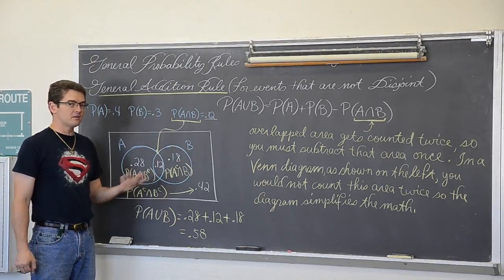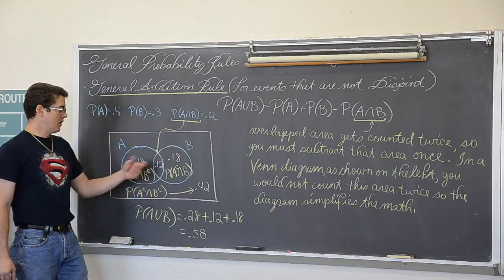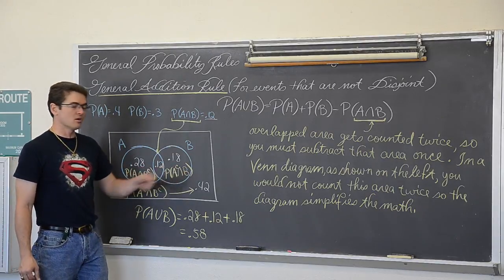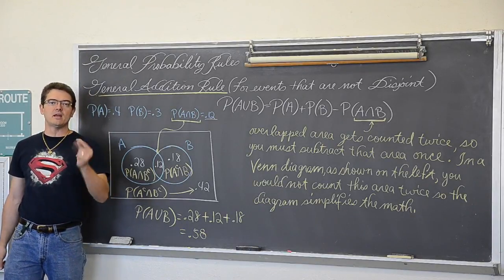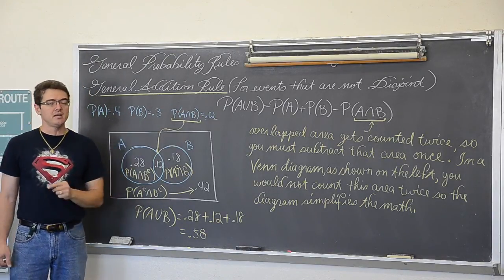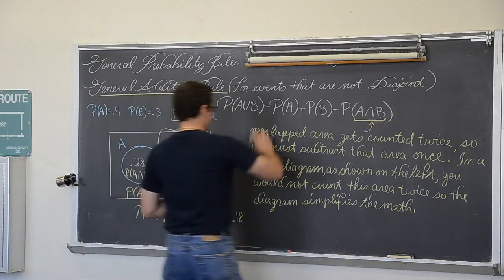So the probability of A or B occurring is 0.58, but with the Venn diagram I can find the probability that neither one occurs, the probability that A occurs and not B, or the probability of not A and B occurring. So see these Venn diagrams not only simplify the mathematics, they also make answering other probability questions from the same setting much, much quicker.